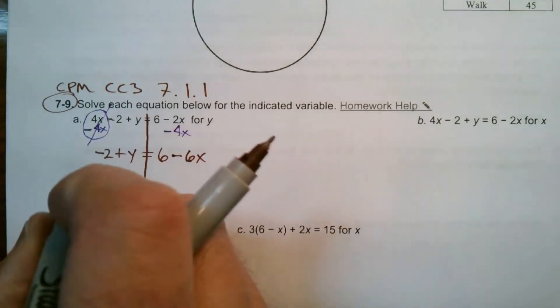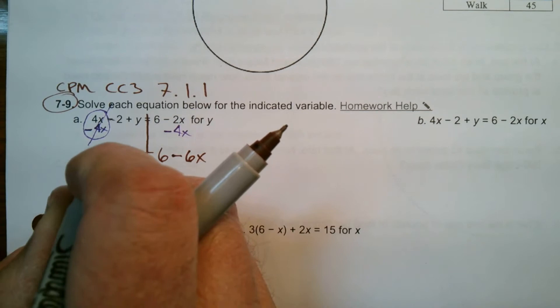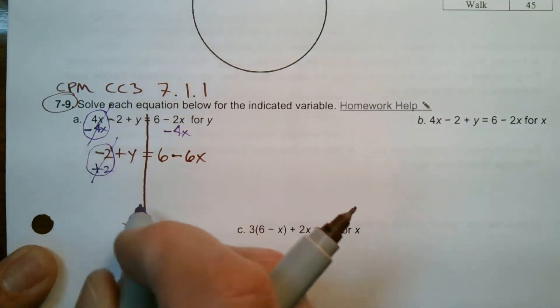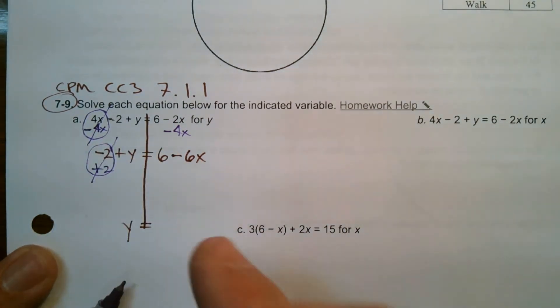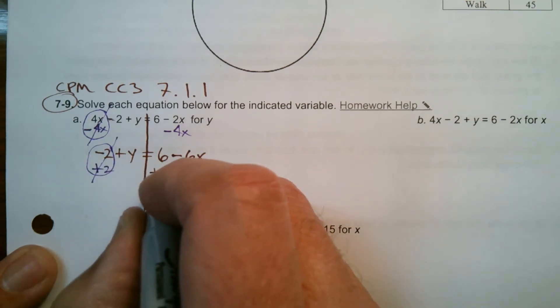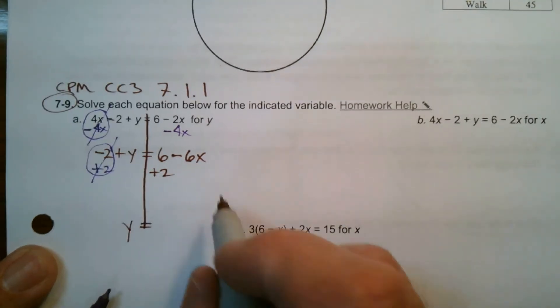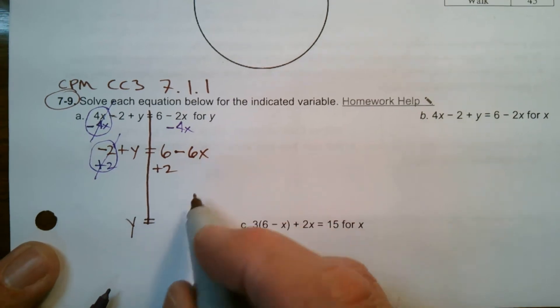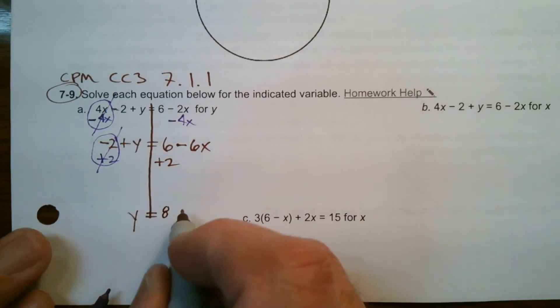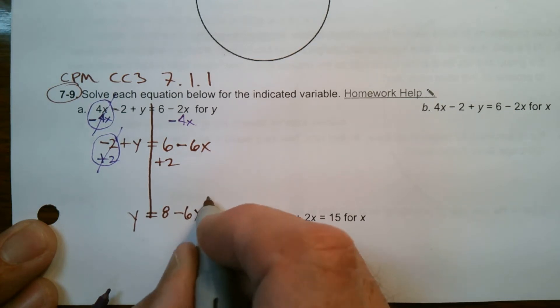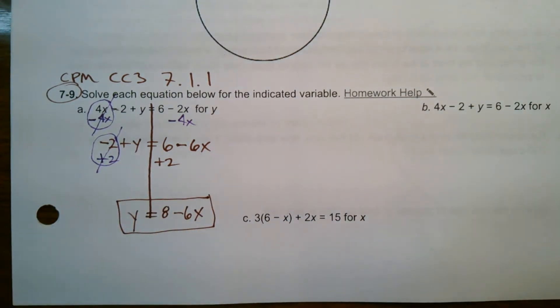So then got to get rid of negative 2 by doing the opposite, which is positive 2. That makes that a zero. Now I've got my y alone. So I just got to do the math on this side and it's a constant, so I'm going to add it to the constant. So it's a 6 plus 2. So this whole thing becomes y equals 8 minus 6x. So I've got my y alone. Solve for y. Good to go.